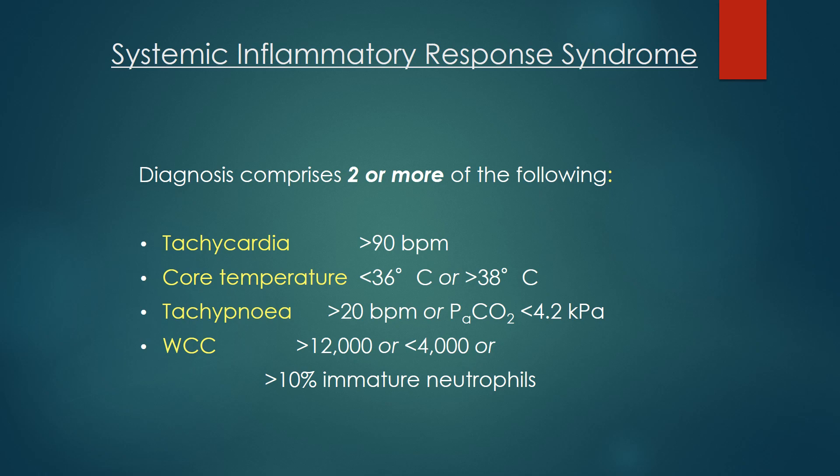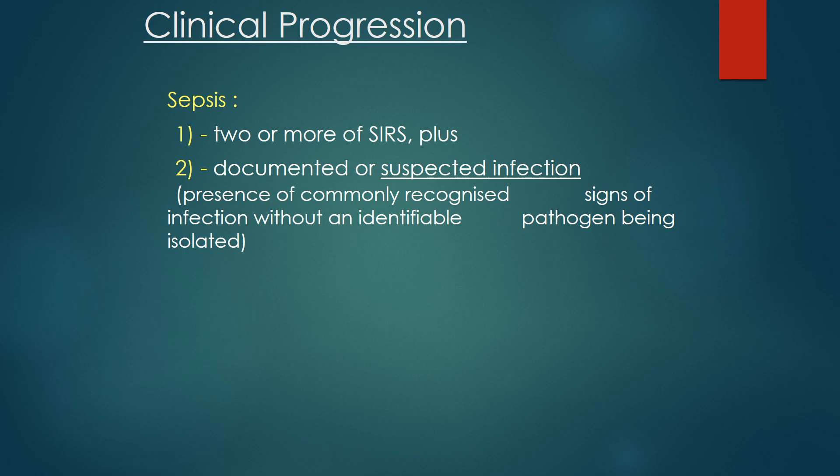The diagnostic criteria for SIRS require two or more of the following: tachycardia more than 90 bpm, core temperature less than 36°C, tachypnea more than 20 breaths per minute, WBC count more than 12,000 or less than 4,000, or more than 10% immature neutrophils. Sepsis is defined as two or more SIRS criteria plus documented or suspected infection, with commonly recognized signs of infection and an identifiable pathogen being isolated.